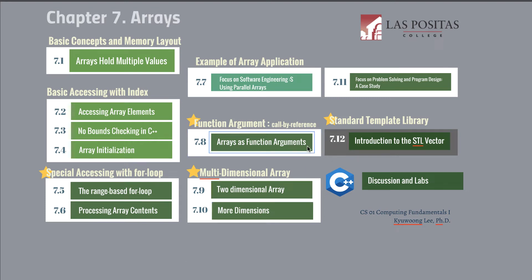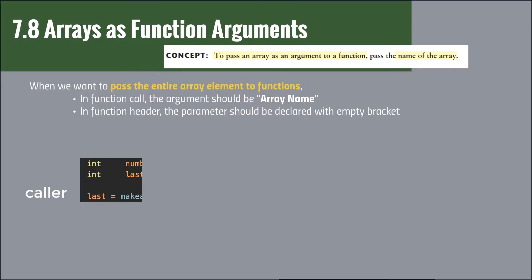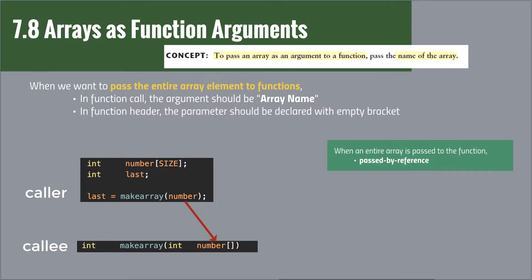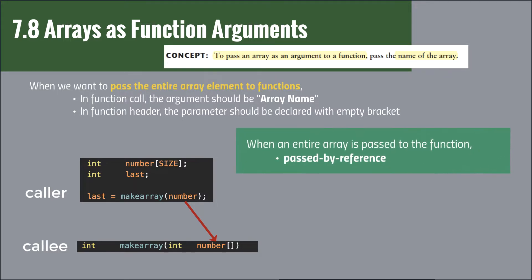In this video, we're going to take a look at 7.8 array as function arguments. When we want to send an array to a function, in the function call we give just the array name, and then in the function heading we specify the array name and empty brackets. When we send an array like that, the array is passed by reference.